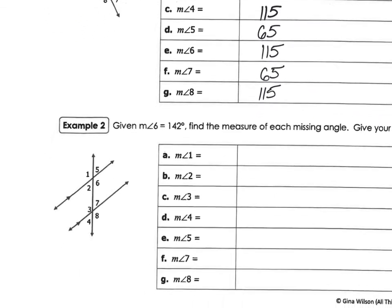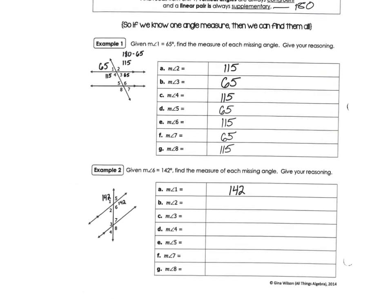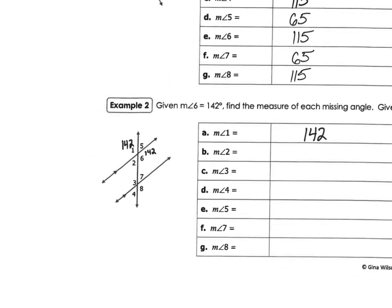Let's slide down to the next one. This says the measure of angle six is 142 degrees. Based on that, using the same process as before — between angles one, two, and five, what other angle is going to be 142? Angle one — correct, because they're corresponding angles.